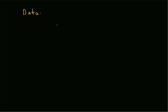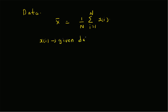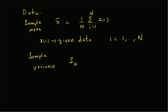Now from data, we have the sample mean x-bar given by (1/n) * summation from i=1 to n of x_i, where x_i are the given data points. Similarly, we have the sample variance s_x given by (1/n) * summation from i=1 to n of (x_i - x-bar)^2.